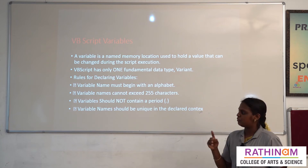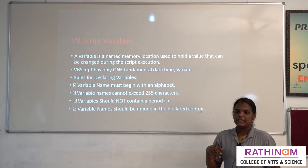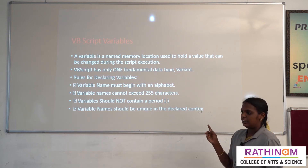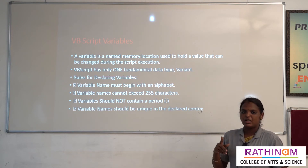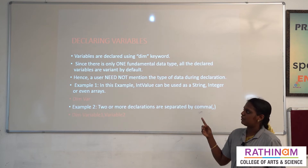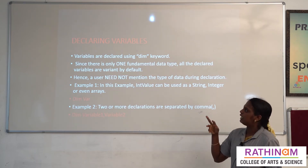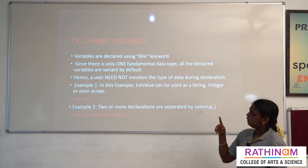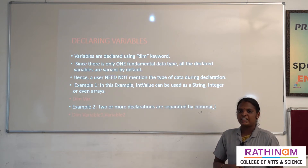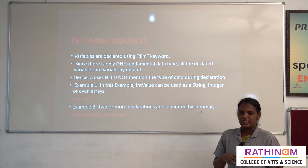The variable name should not contain the dot operator (period), and the variable name should be unique in the declared context — you cannot declare the same variable name more than once in your code. Variables are declared using the dim keyword. Since only one fundamental data type is available in VBScript, you do not need to specify the data type. You just specify the keyword dim, and it automatically assigns the data type depending on the type of value.